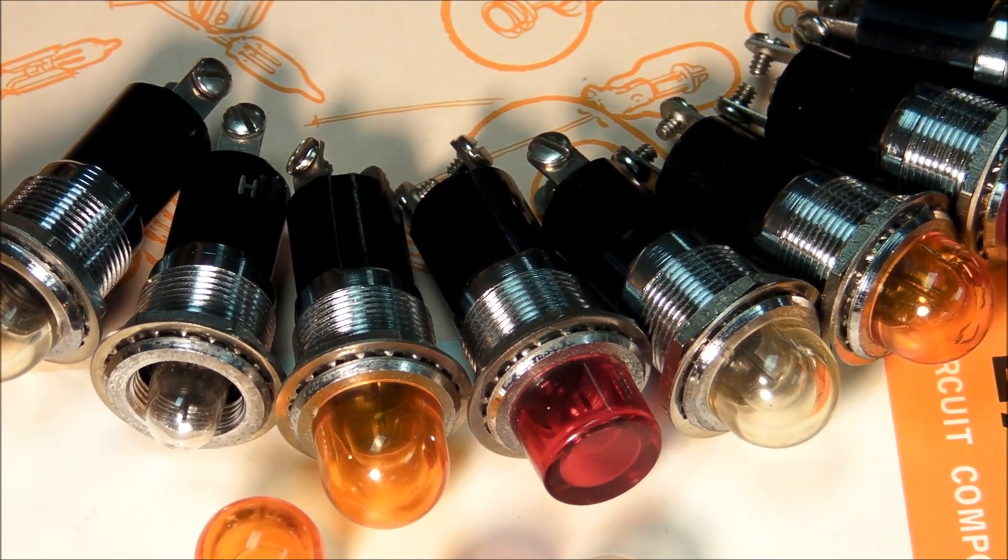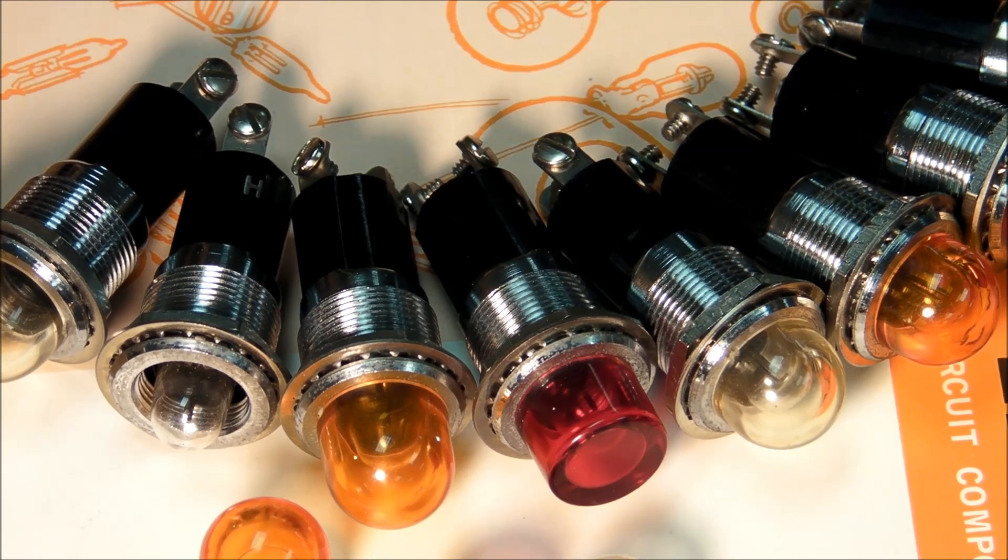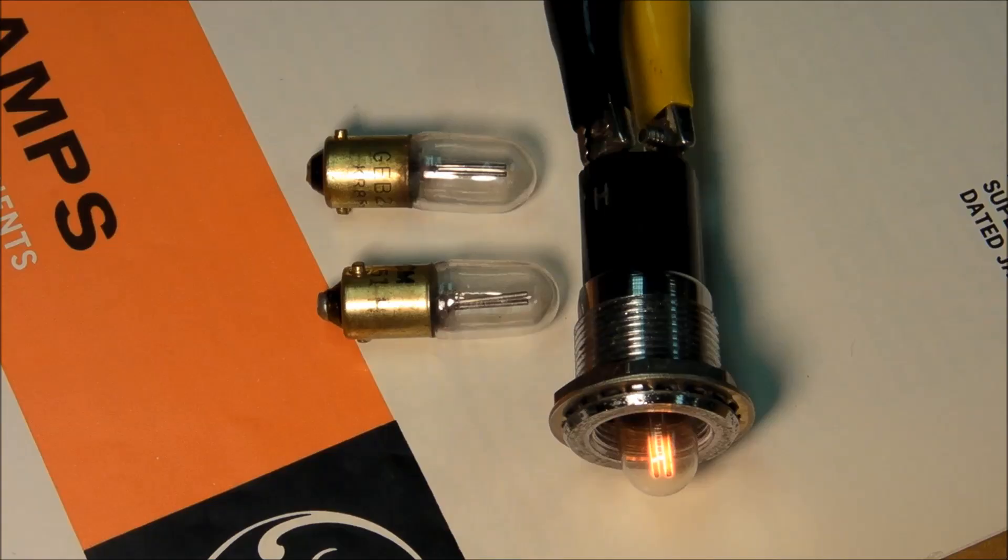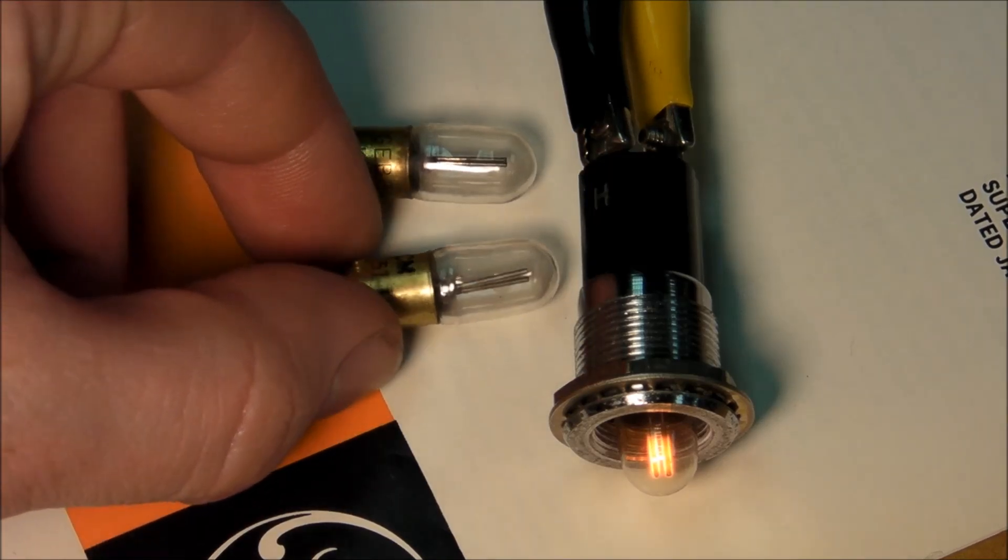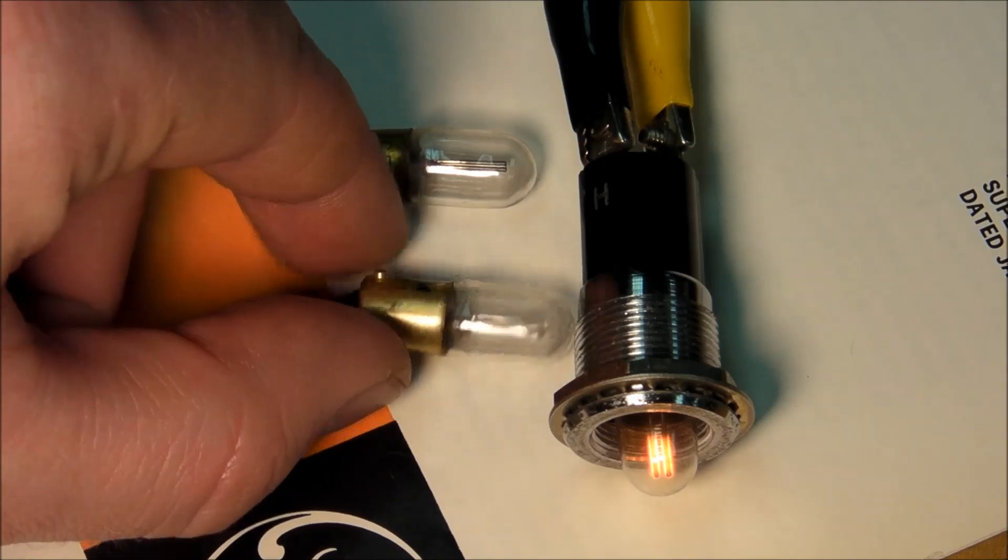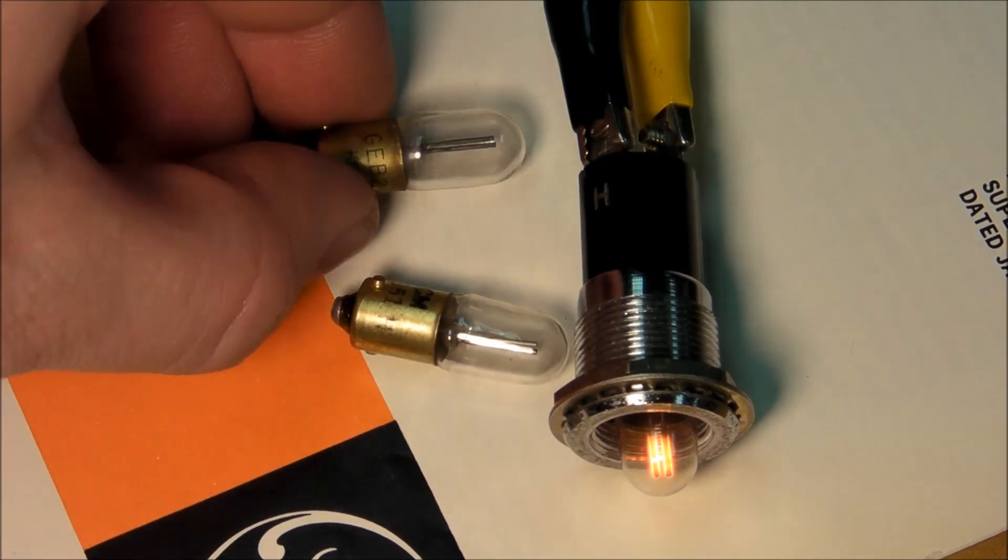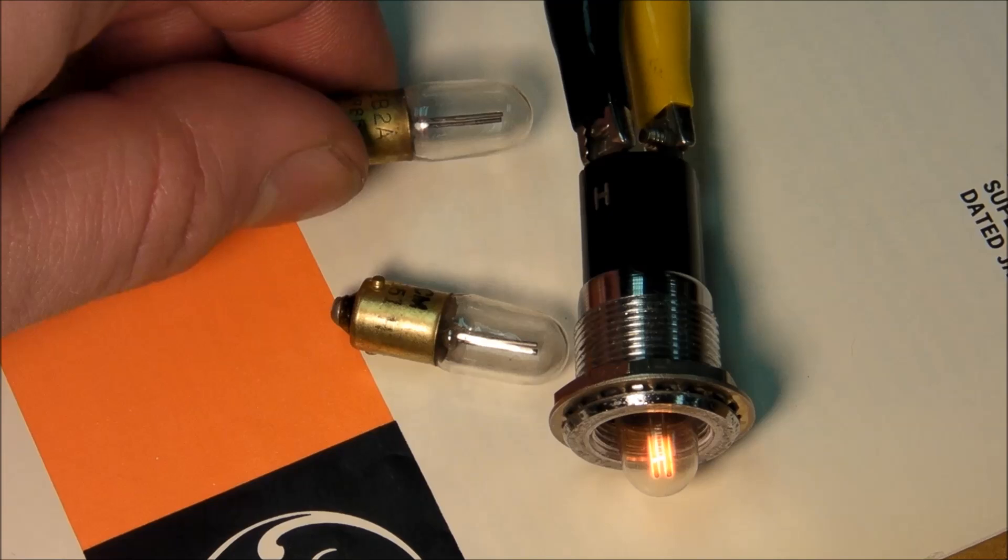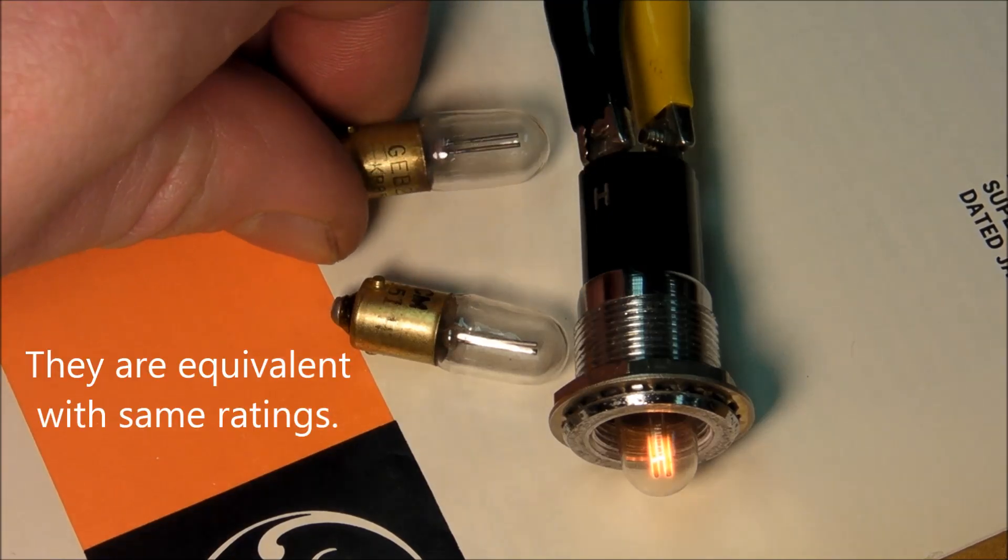Otherwise there will be a runaway cascade effect that will destroy the lamp if you were to just plug it into 120 volts. Here's a closer look at the lamps inside the sockets. We've got part number NE51H and part number GEB2A.